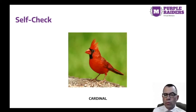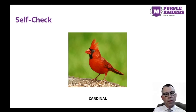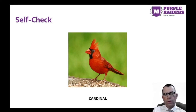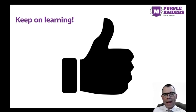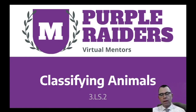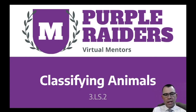The brilliant red wings, feathers, and crest of a male northern cardinal calls attention to itself. Cardinals love to eat seeds, fruits, buds, and insects. How would you classify a cardinal? Nice work! It was great learning about all the ways scientists can classify animals with backbones. Keep asking questions, keep exploring, and keep on learning. Thanks for joining me today with the Purple Raiders Virtual Mentors. We'll see you next time.